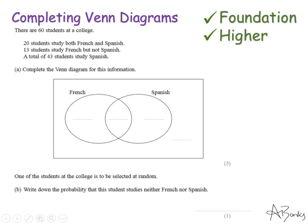This question says there are 60 students at a college, 20 students study both French and Spanish, 13 students study French but not Spanish, and a total of 43 students study Spanish. Complete the Venn Diagram for this information. You're probably already familiar with Venn Diagrams, so you should know that this section here in the middle will represent the students that study both French and Spanish. This will be our French only students, this will be our Spanish only students, and this out here will be students that study neither French nor Spanish.